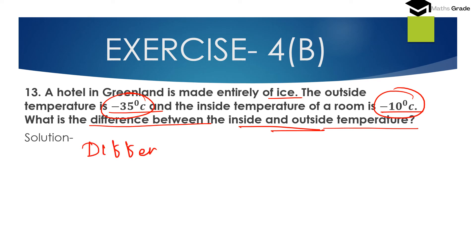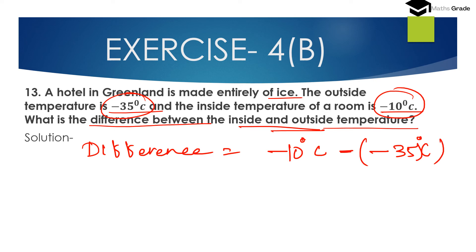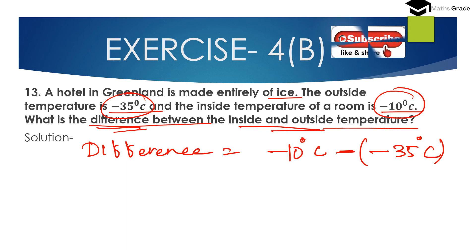Difference of inside and outside temperature: inside temperature is minus 10 degrees centigrade, minus the outside temperature which is minus 35 degrees centigrade. So the expression is minus 10 minus of minus 35. Minus of minus becomes plus, so it becomes minus 10 plus 35 degrees centigrade.